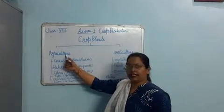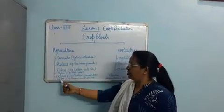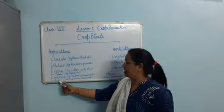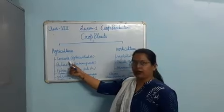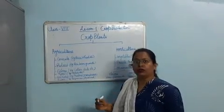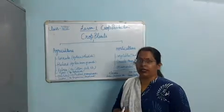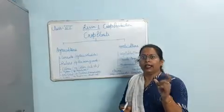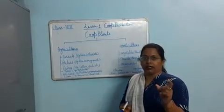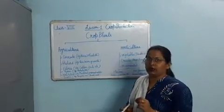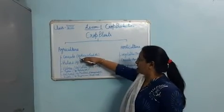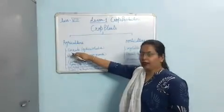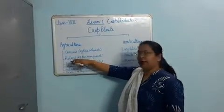First we will start with agriculture. There are different types of crops in the category of agriculture that we grow on a large scale. First of all, cereal crops. Cereals are those plants that provide us carbohydrates — they are a rich source of carbohydrates, which are energy-giving food, providing energy to our body. Rice, wheat, barley — these types of plants come in this category.